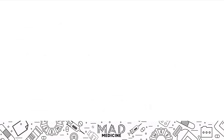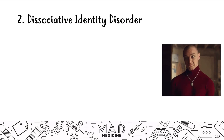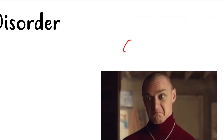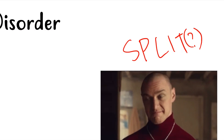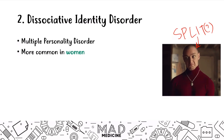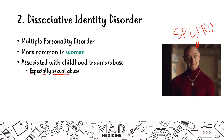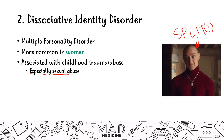The next disorder is dissociative identity disorder, more commonly known as multiple personality disorder. This is more common in women and is usually associated with childhood trauma and abuse, especially sexual abuse. Just like the other disorders, it often develops during or after a traumatic event. Dissociative identity disorder is typically a disorder associated with sexual abuse, and it usually starts after the abuse occurs.